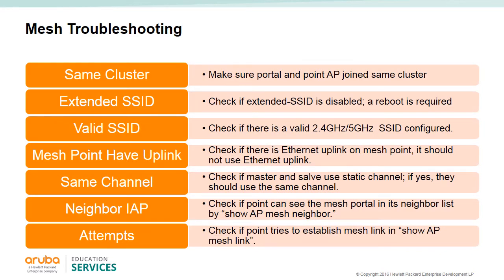Common issues where mesh links can't automatically resolve can be debugged with the following actions. If two IAP clusters are in proximity, the mesh IAP may have joined the wrong cluster. Mesh will not work if the extended SSID is not disabled, as the IAP mesh has no mesh SSID. The mesh point should have an uplink to the network. If the mesh portal is using a static channel, the mesh point must also use that channel. Make sure the mesh IAP is within radio range. Two helpful commands are 'show AP mesh neighbor' and 'show AP mesh link'.